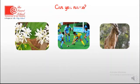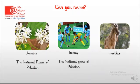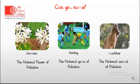Now students, can you name these? From left hand side, this first picture — can you name this flower? Yes, it's Jasmine. Jasmine is the national flower of Pakistan. Can you name this game? Yes, it's Hockey. Hockey is the national game of Pakistan. Can you name this animal? It's Markhor. Markhor is the national animal of Pakistan. Now let's discuss a few more national identities of Pakistan.